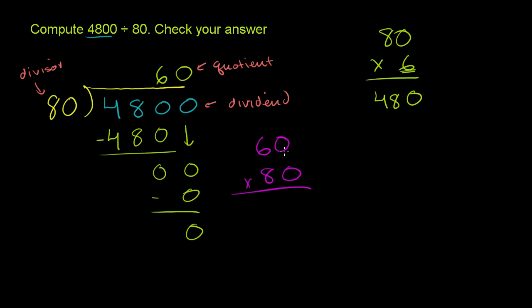Or we could do it by hand. 0 times 0 is 0. 0 times 6 is 0. Then we'll put a 0 here, because we're now in the 10's spot. Put the 0 here. 8 times 0 is 0. 8 times 6 is 48. Add all of this up, you get 4,800. So it works.